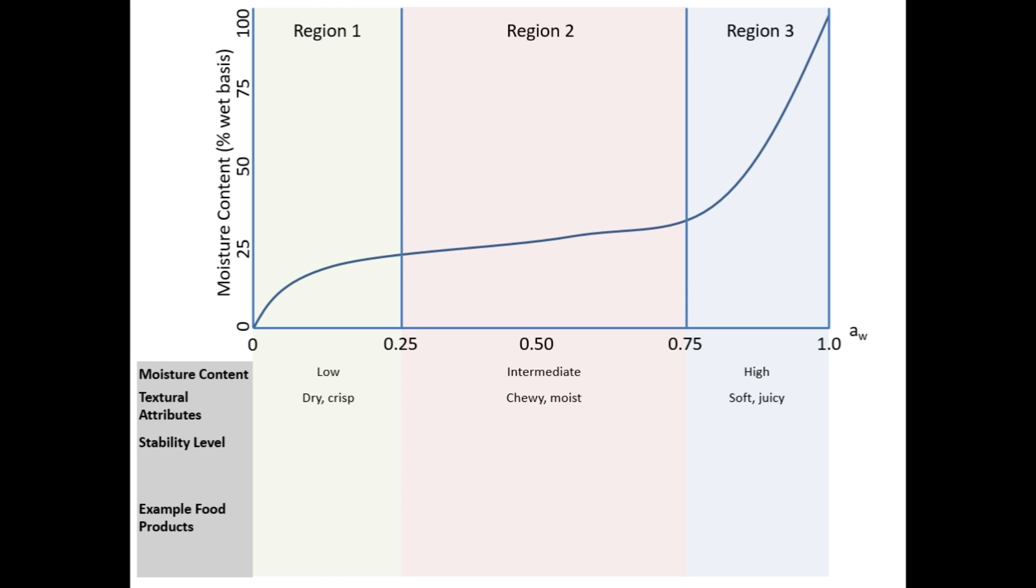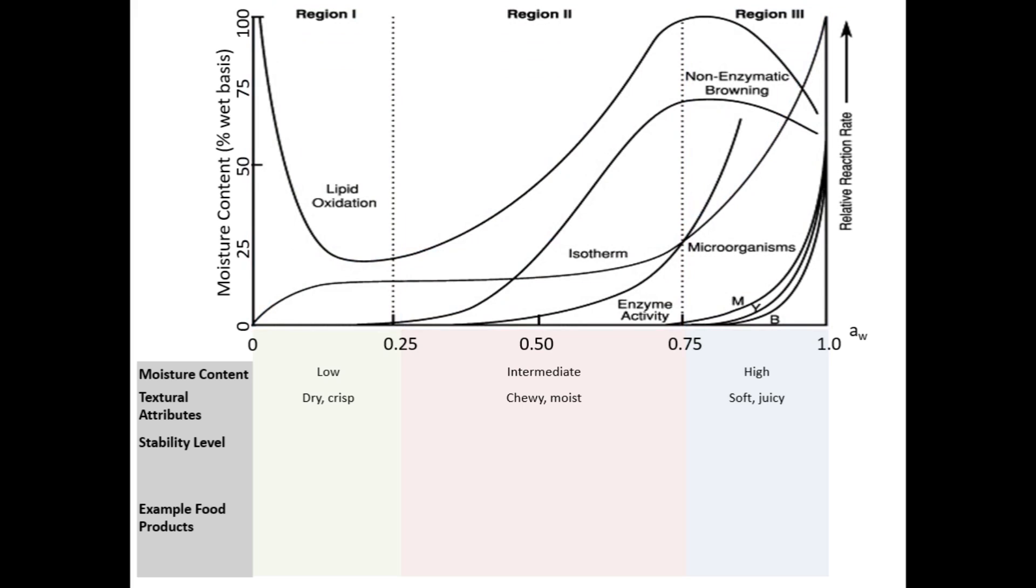Food stability also differs between water activity regions. We can gain insight into differences in food stability by using the isotherm as a template for a map of sorts. Many reactions and microorganisms that affect the quality and stability of foods have water activity-dependent reaction rates. So by plotting the reaction rates, or growth rates for microorganisms, against the water activity, we can predict which factors will affect a food's stability based on the food's water activity. The number of factors that can reduce food stability increase with AW.